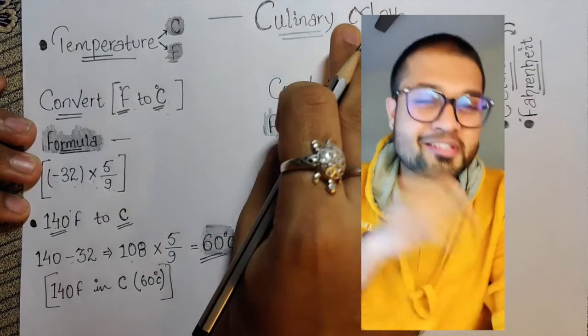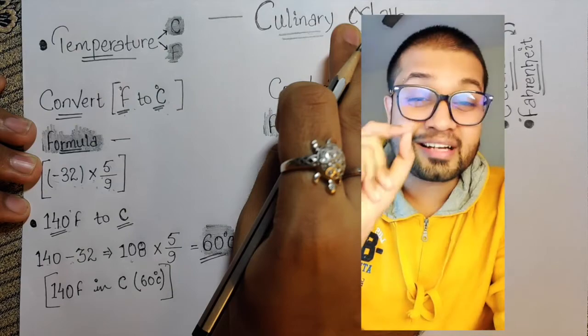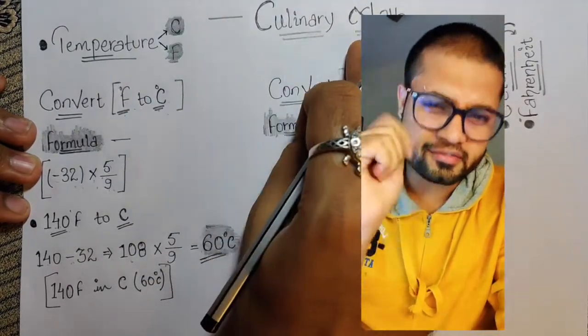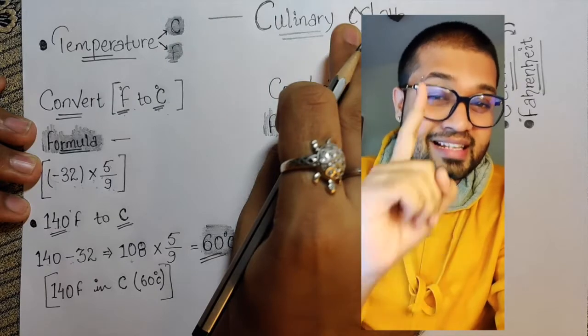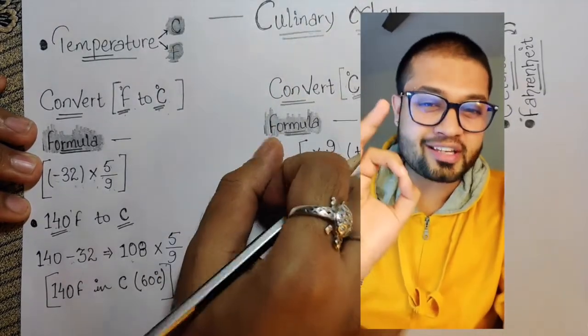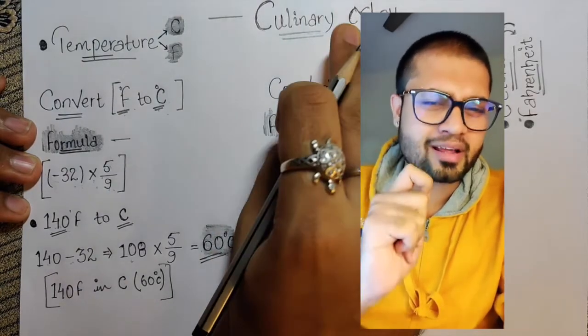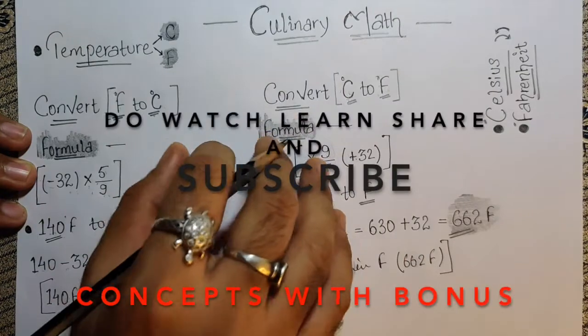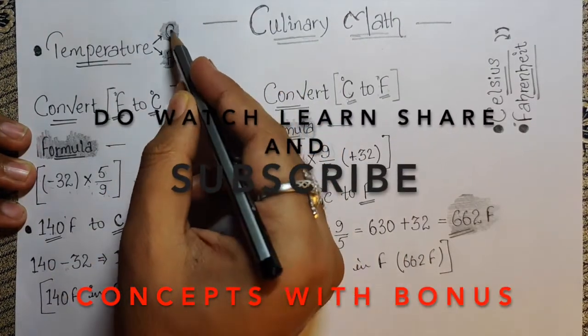Hi everyone, this is Bonus and today's session is all about culinary math - F to C and C to F, Fahrenheit to Celsius and Celsius to Fahrenheit. Watch this video till end to understand the trick and how to remember this formula easy.